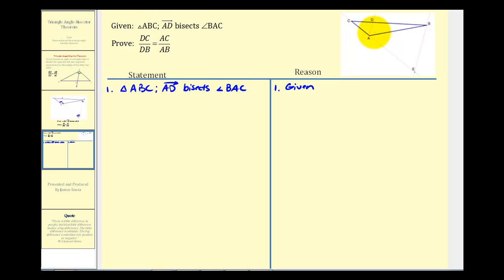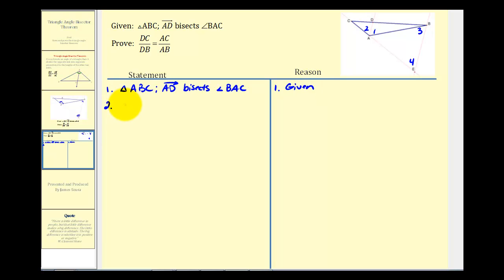Now let's label these angles so we can keep track of them. Call this angle one, this angle two, this angle three, and this angle four. Because ray AD bisects angle BAC, we know angle one is congruent to angle two, by definition of angle bisector.